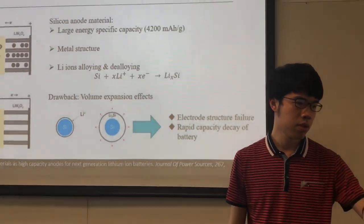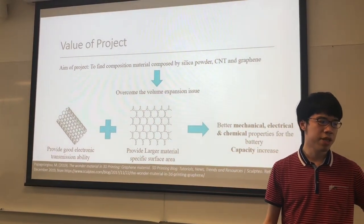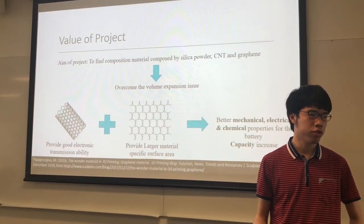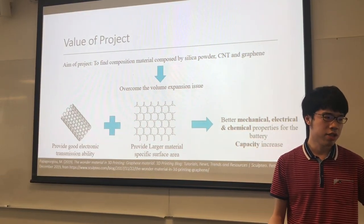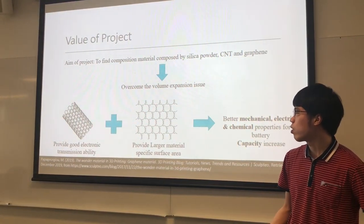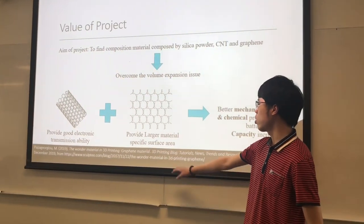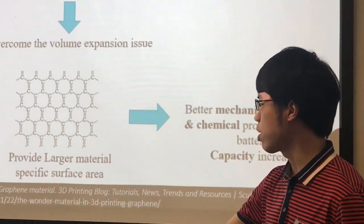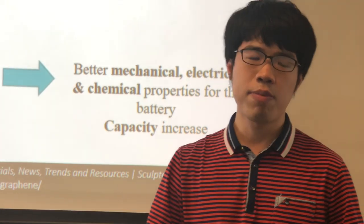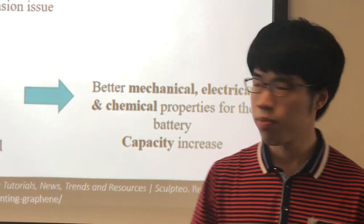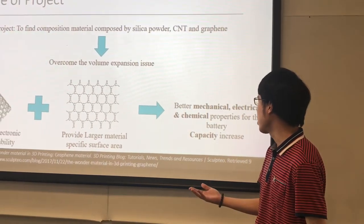In this project, we aim to solve that issue by adding carbon nanotubes and graphene into the electrodes. Carbon nanotubes provide good electron transmission ability, while graphene gives the large specific surface area we need. Compared to expensive nano-silicate, these materials are cheaper and have better mechanical and electrochemical properties for the battery.